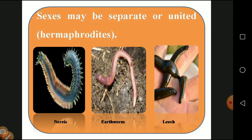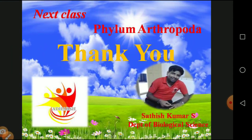The sexes may be separate or united — some organisms have separated male and female sexes, while others are hermaphroditic with both sexes in the same organism. Examples of Annelida are Nereis, earthworm, and leech.